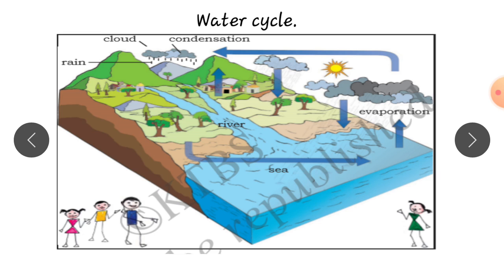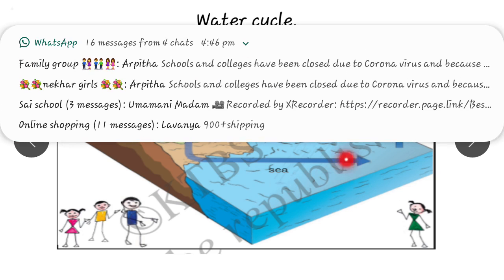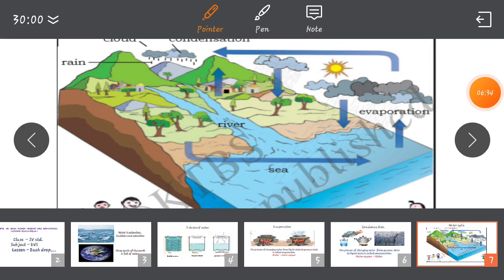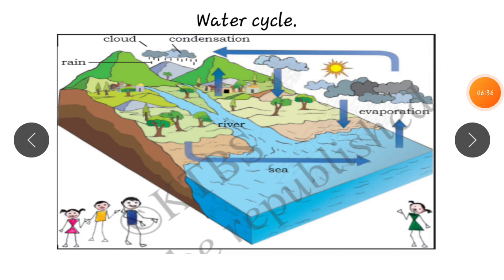Due to the heat of sun, the water evaporates. Then it condenses, children. Observe, water evaporates, then it becomes condensed, it forms clouds.